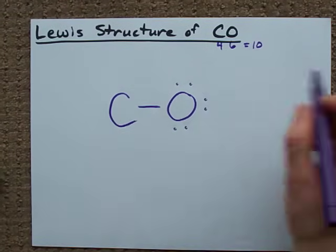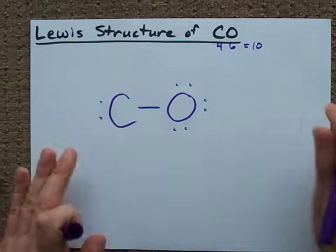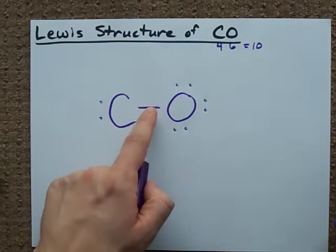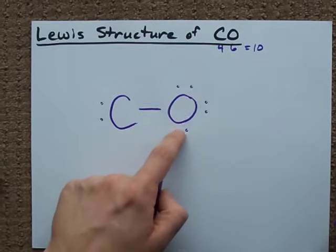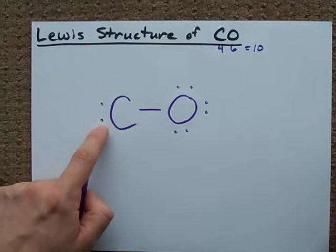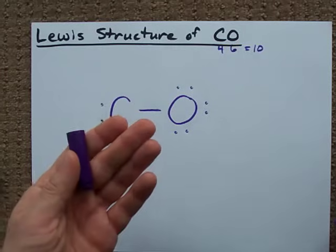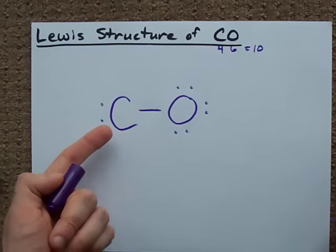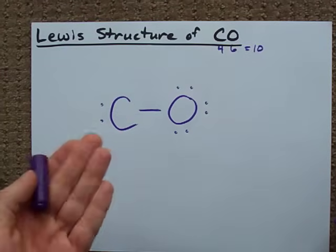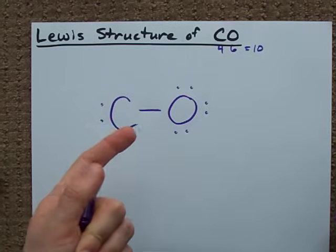Oxygen is now filled, nine, ten. There's my first two electrons. Fill your outer atoms, then fill your central atoms. Now I'm just calling C central here because it's the least electronegative. You'll get the same answer if you'd assumed it was the other way around.